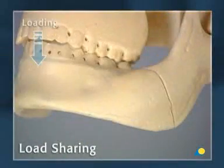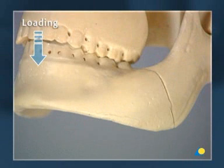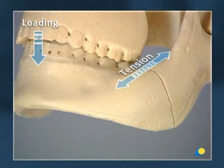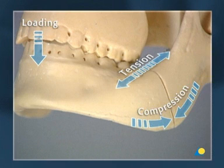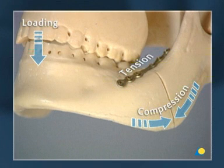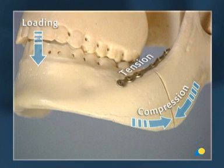Loading across a mandible angle fracture leads to tensional forces at the oblique ridge and compressive forces at the lower border. These tensional forces can be borne by a 2.0 locking plate positioned at the oblique ridge of the mandible. The compressive forces can be borne by the fracture surfaces, particularly at the lower border, provided there is an intact bony buttress.